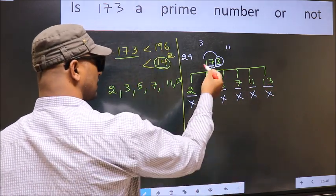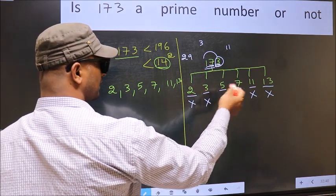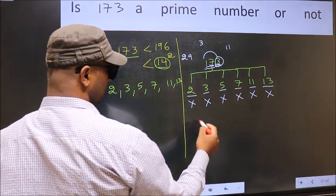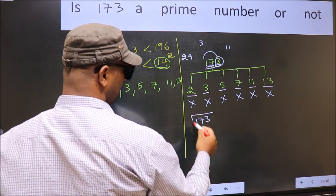So, this number is not divisible by any of these numbers. Hence, 173 is a prime number.